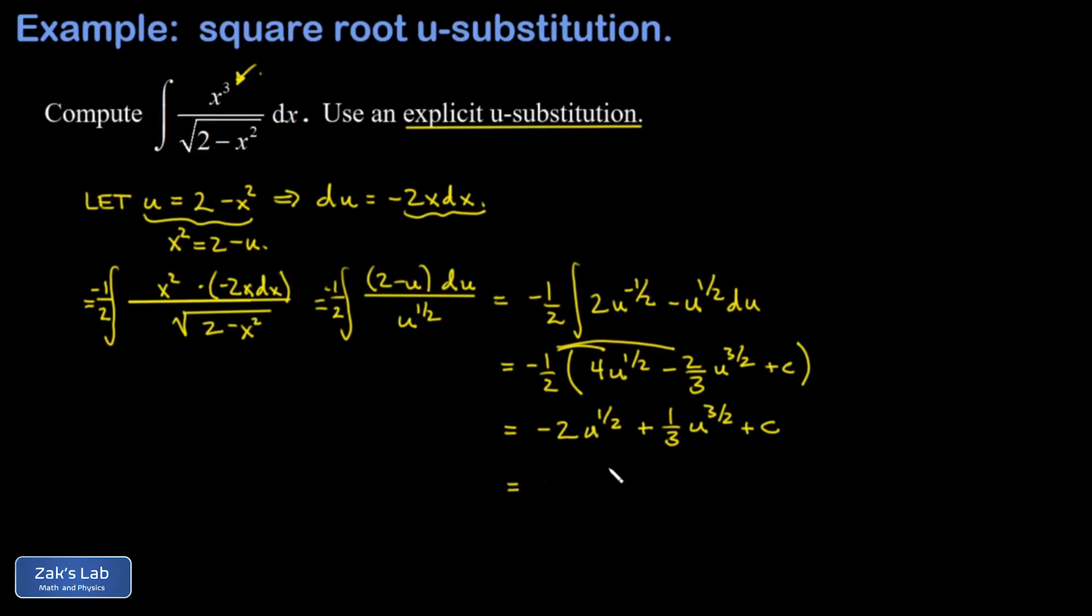Finally, I need to sub in the original definition of u in terms of x. So I get negative 2, and I'm going to use a square root instead of a power of 1 half because it looks better. And u was 2 minus x squared. And then I have a plus 1 third times the quantity 2 minus x squared to the 3 halves plus an arbitrary constant.